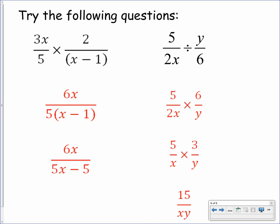Okay, here are your answers to these questions. For the first one, you should have the answer of 6x over 5x minus 5. And for the second one, you should have 15 over xy. All the steps are shown for you. So if there's something that you're not clear about, make sure you ask your teacher when you get to class.